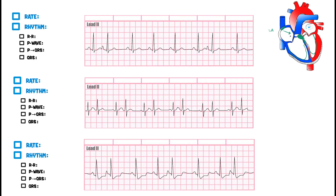Sometimes this little ectopic focus becomes agitated. When irritated atrial tissue starts sending out its own action potentials, one trigger is hypoxia — low oxygen in the blood. This can result from COPD, pneumonia, pneumothorax, anemia, or a pulmonary embolus. When there is hypoxia, these tissue cells become super agitated and start sending out action potentials — sometimes faster than the SA node, beating it before it can get its signal to the AV node.